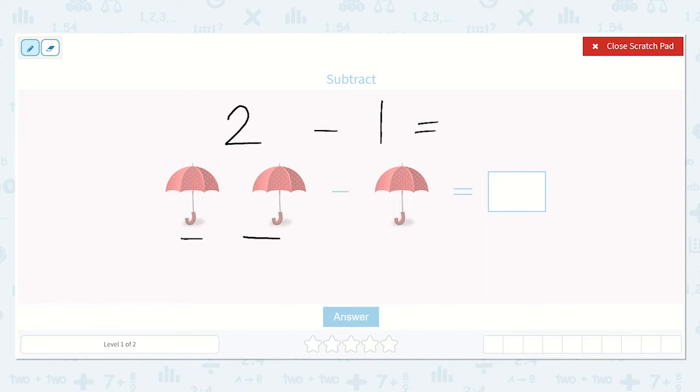So, if we have 2, 1, 2, and we take away 1 of those, how many do we have left? Yes, just 1. So our answer is 1.